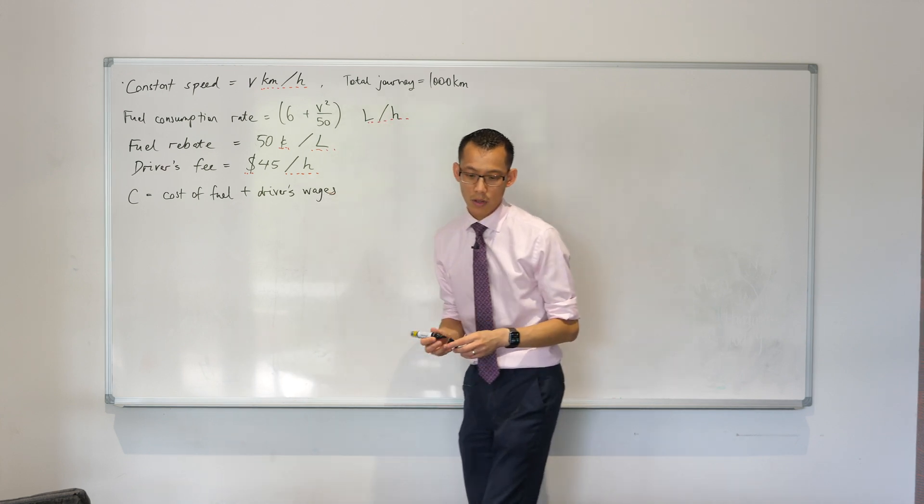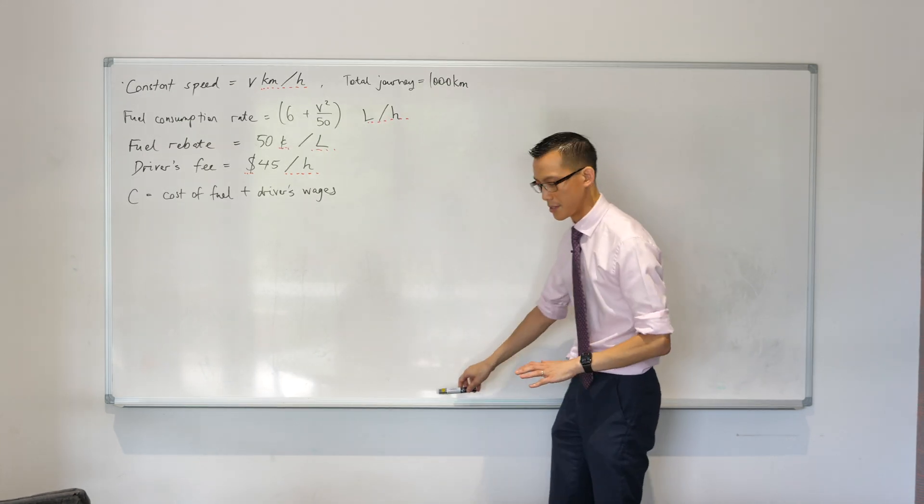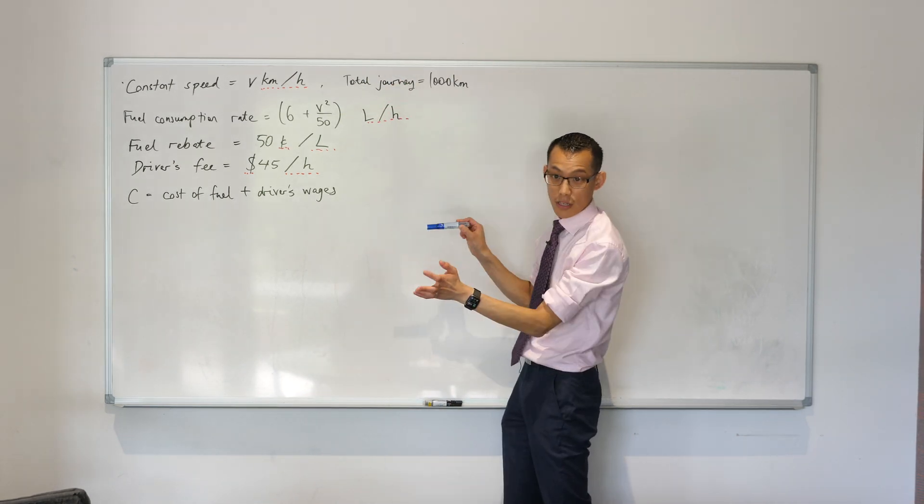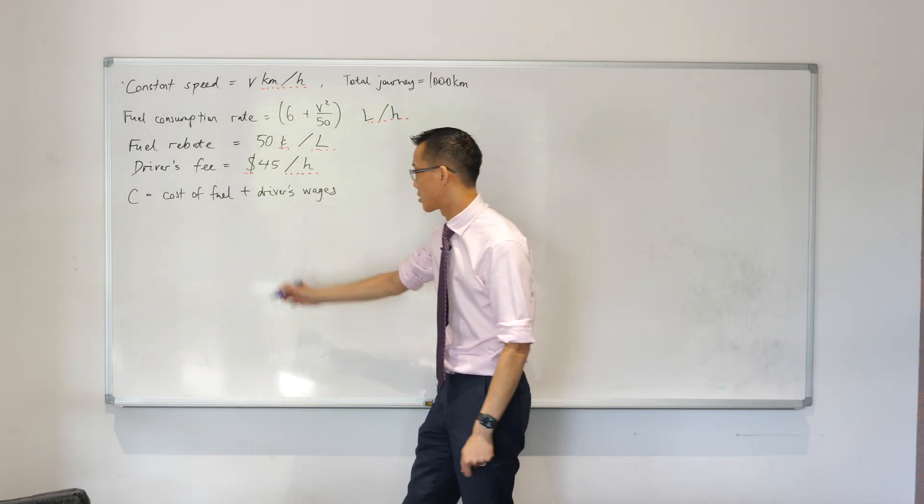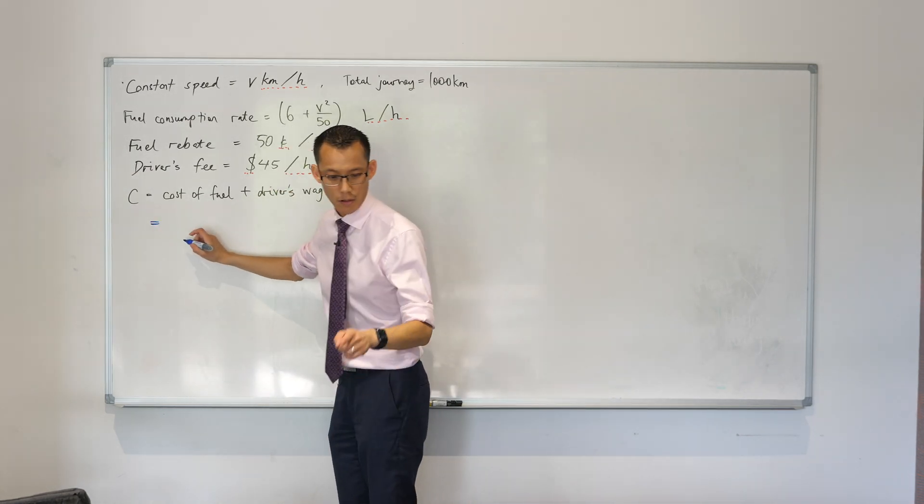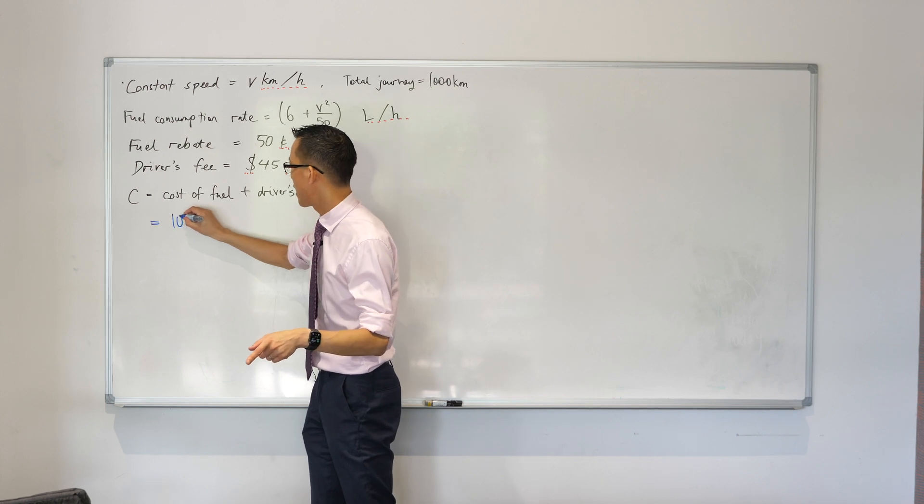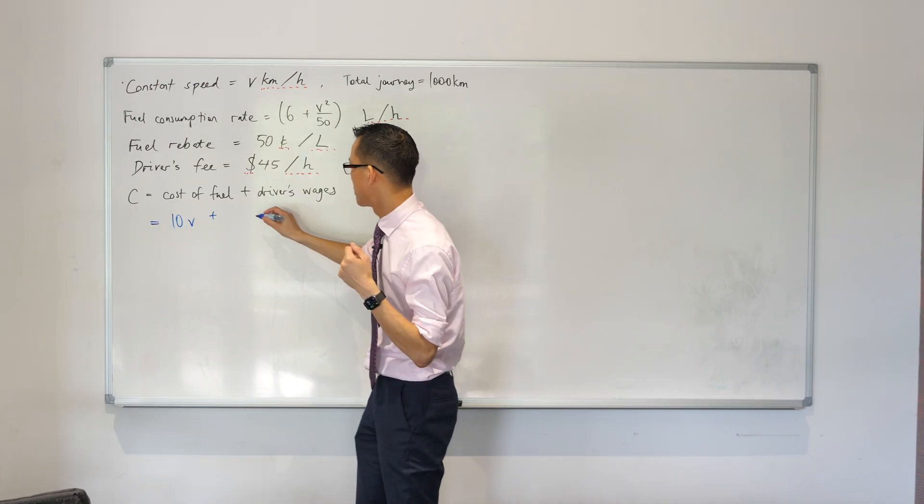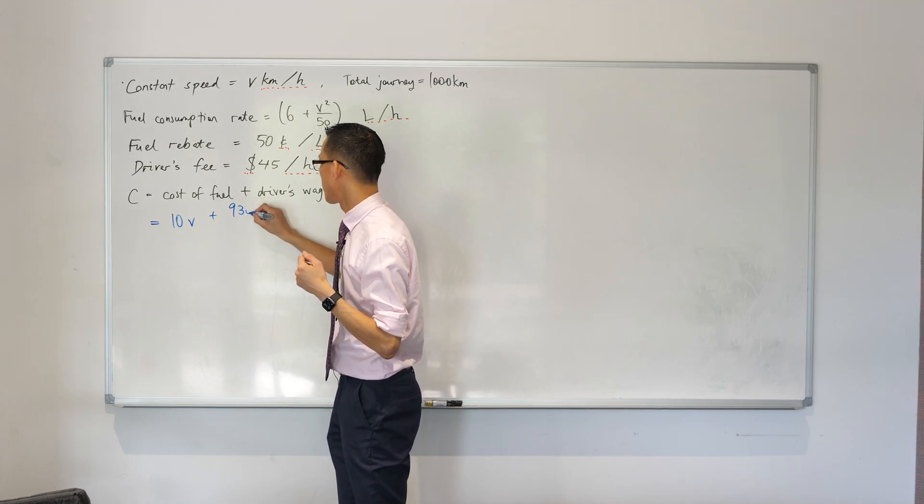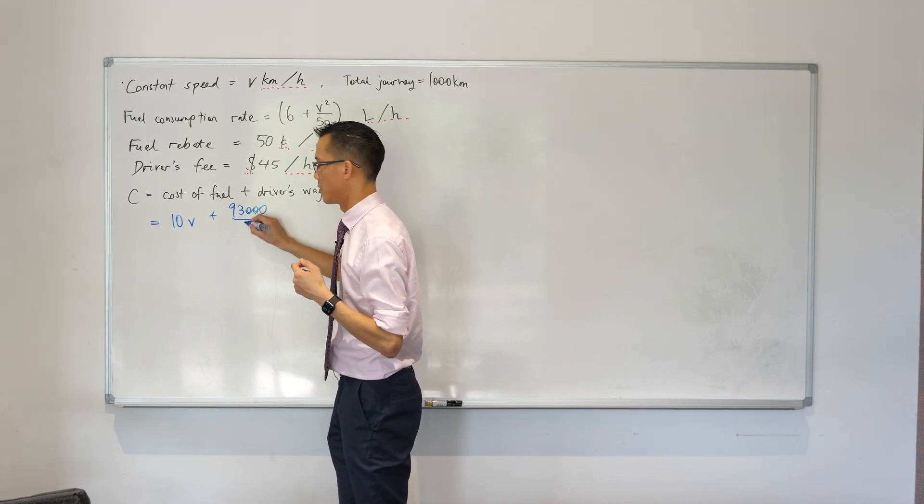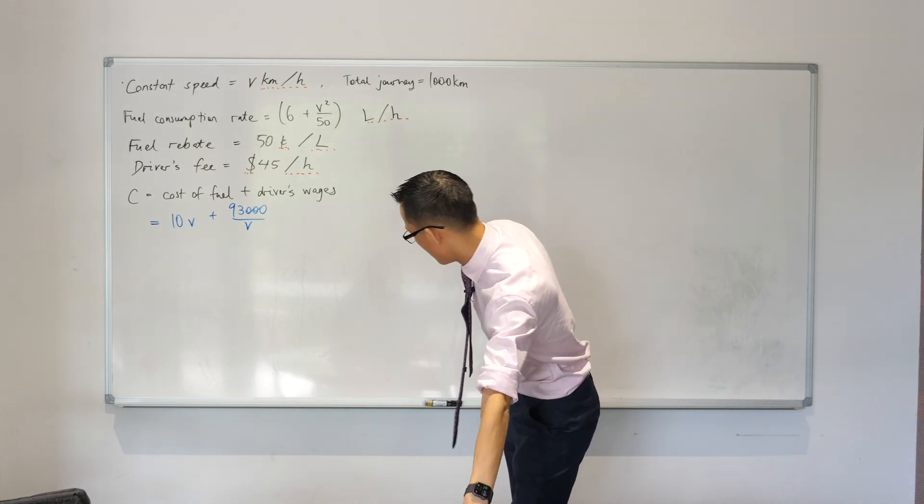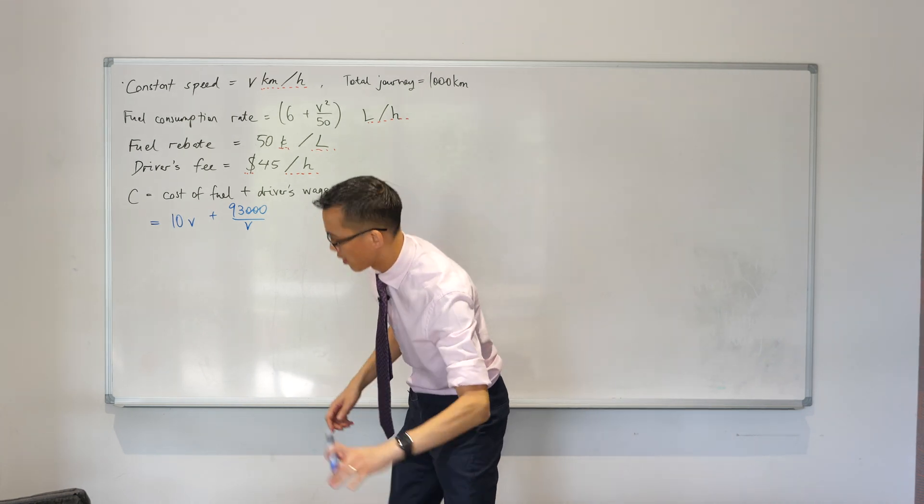Okay now what's nice about this part is that there is actually a result given to us. So we need to assemble all of this stuff and then the result they're going to get us to is this C equals, you can see the result there, it's 10V plus 93,000 over V if the company was to pay for two drivers.